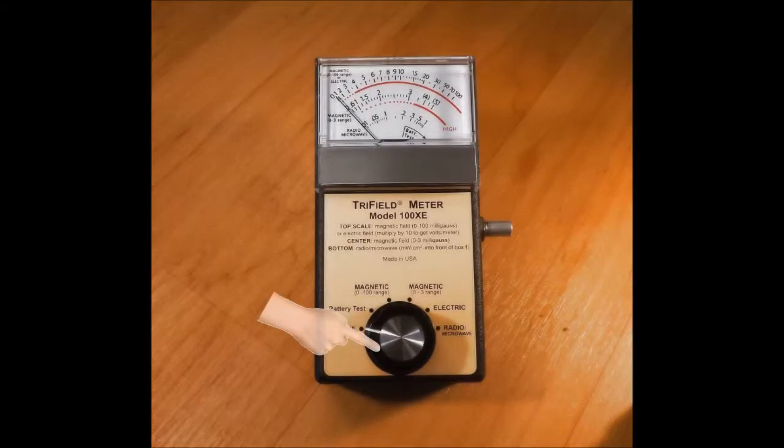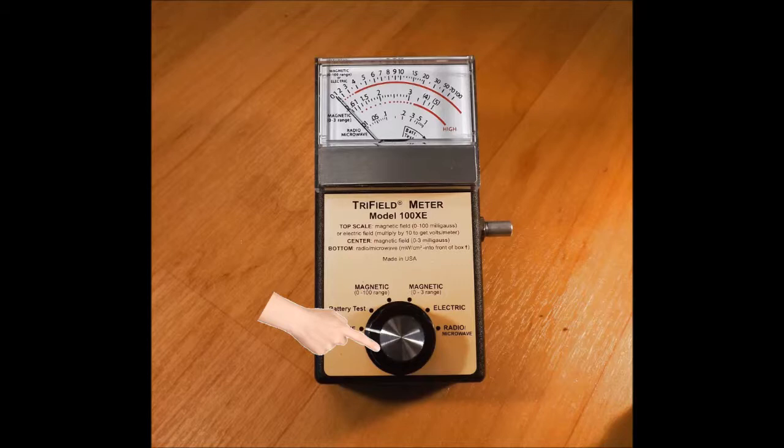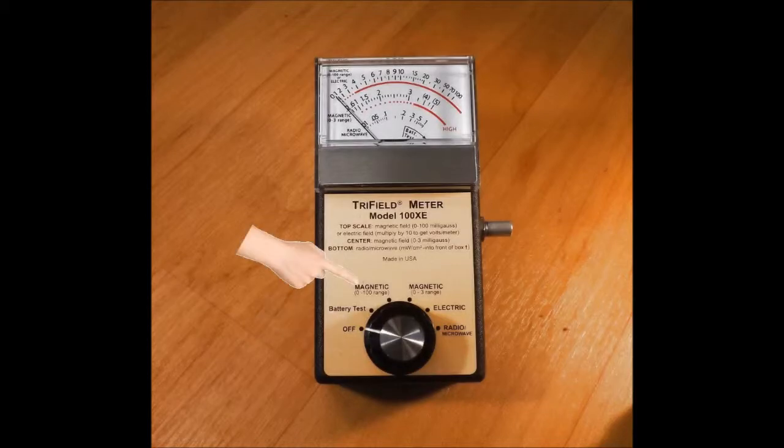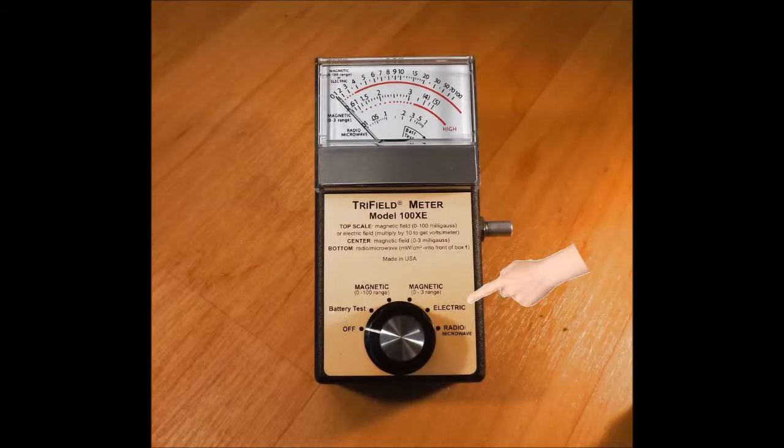On the front of the meter is a rotating knob which is used to select a field type. You can select only one type at a time. Set it to magnetic or electric or radio microwave.